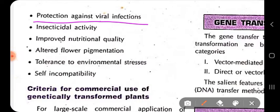Another trait is protection against viral infection. Genes that provide resistance and protection against viral infection are introduced into plant cells, and after successful introduction and expression of that gene, through tissue culture techniques we grow that plant cell into multiple plantlets having that trait — protection against viral infection.